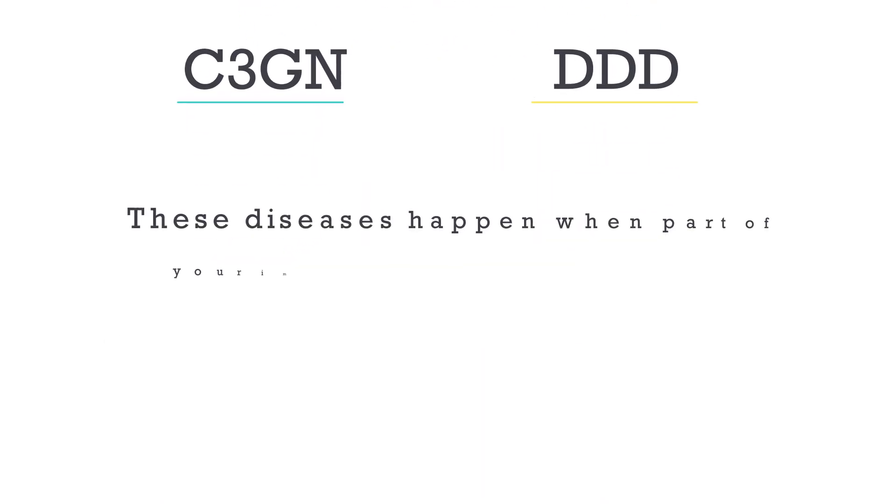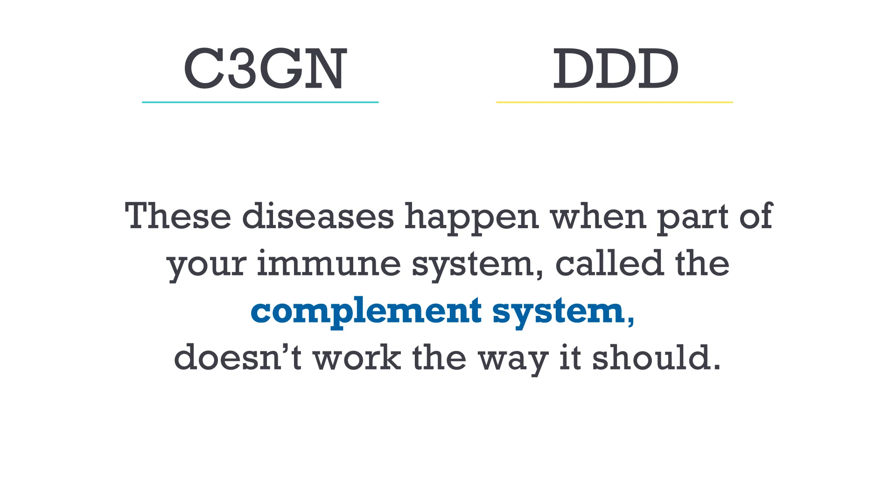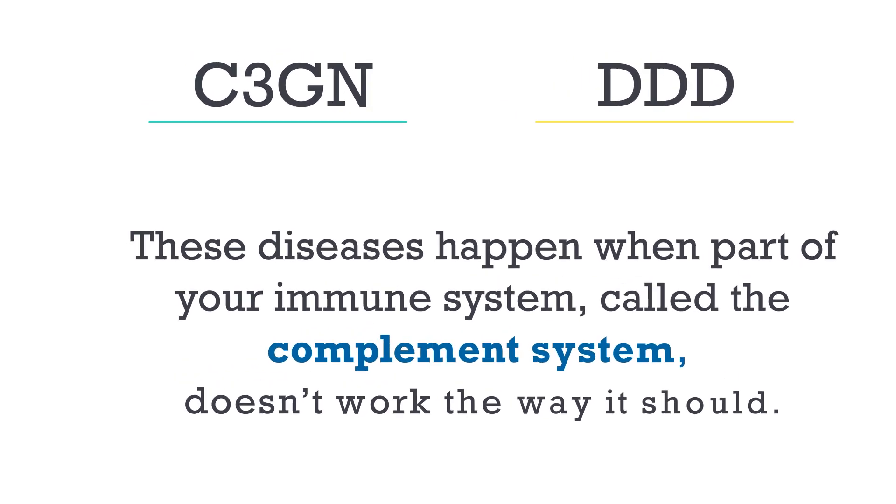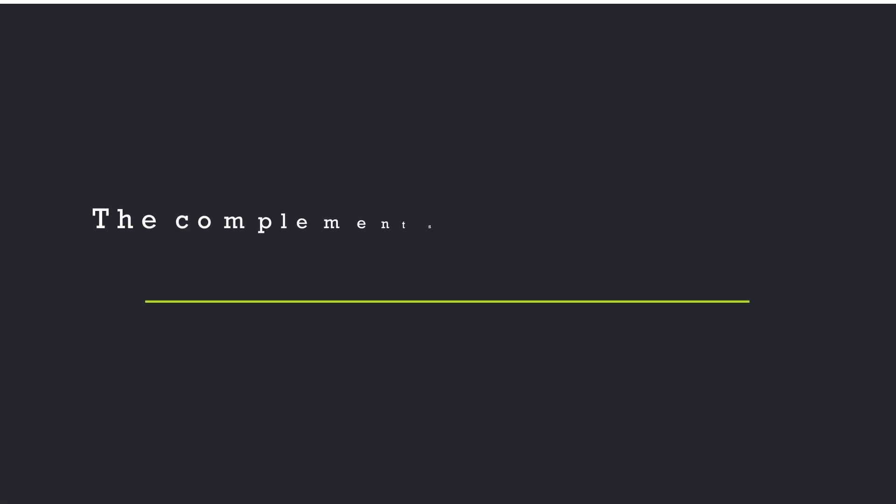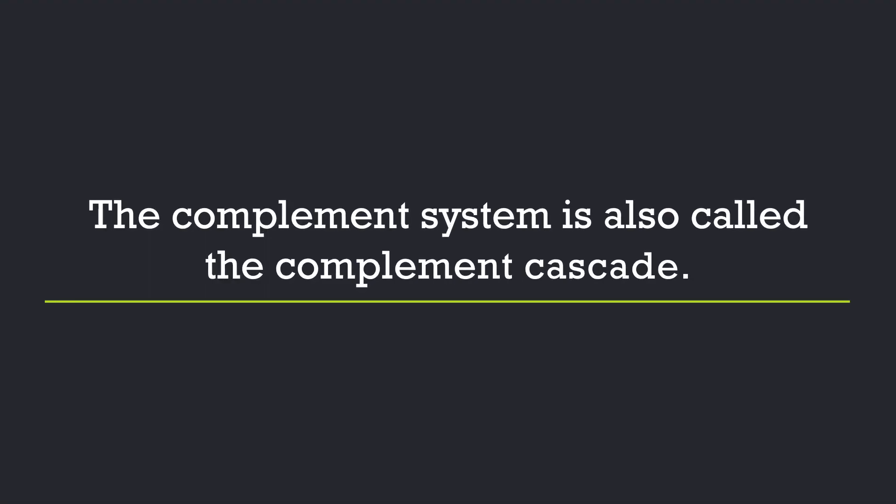These diseases happen when part of your immune system, called the complement system, doesn't work the way it should. In fact, the C in C3G stands for complement. The complement system, which you are born with, is also called the complement cascade.